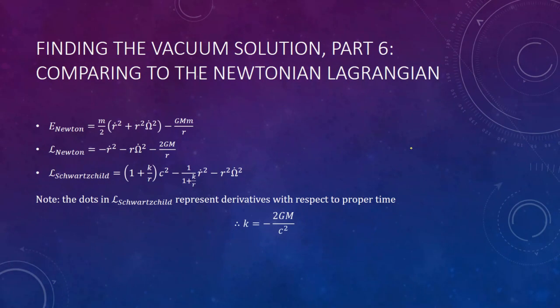So lastly, we'll compare it to the Newtonian Lagrangian, and we know that under calm conditions it must be the same. The energy of a Newtonian system of gravity takes this form: this being the gravitational potential energy and this being the kinetic energy. By simply rearranging some constants—dividing by m, multiplying by 2, and then multiplying by negative 1—you come up with this Lagrangian. I set all elements to negative to make it easier to compare to the Schwarzschild Lagrangian that we have.